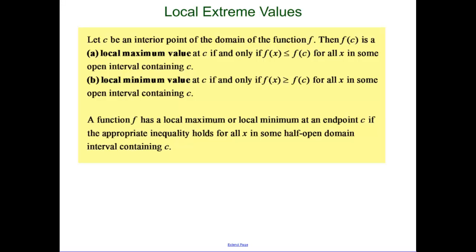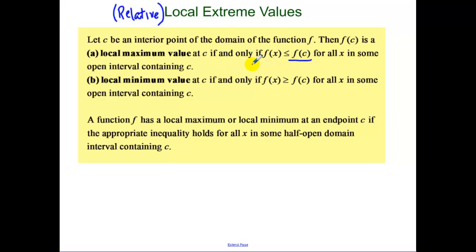A more specific definition for local extreme values — I sometimes call these relative. A function has a local maximum if, on an interval, this point is higher than all of the other points around that value. And a local minimum if this function value is lower than all of the other points around that value.